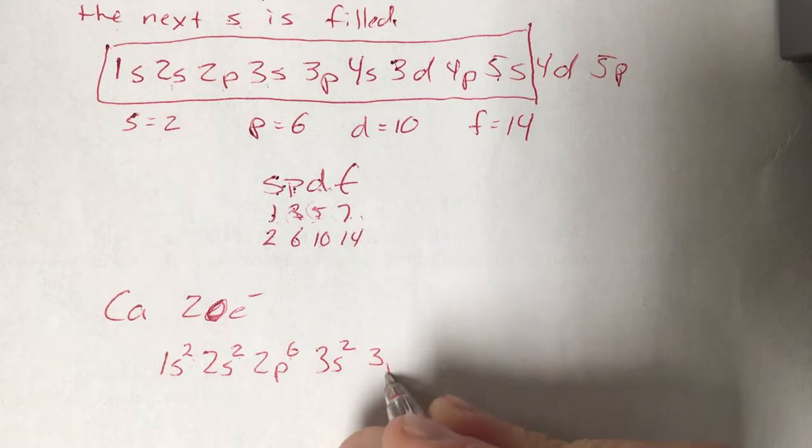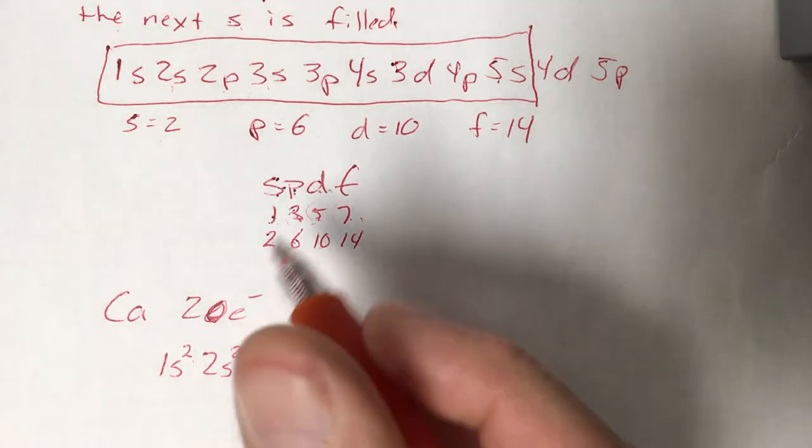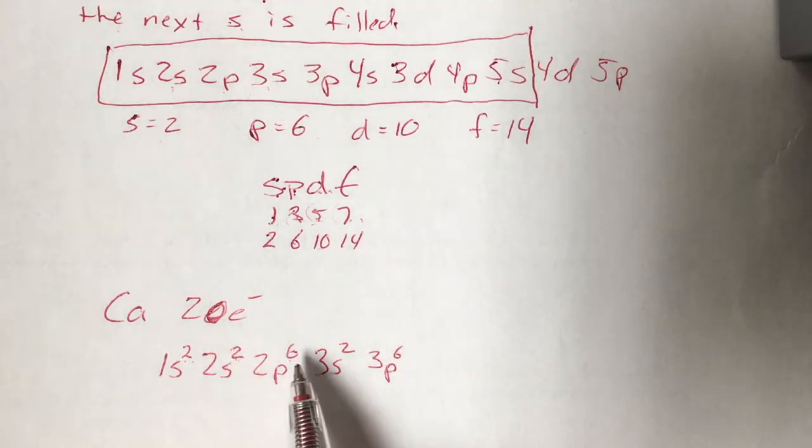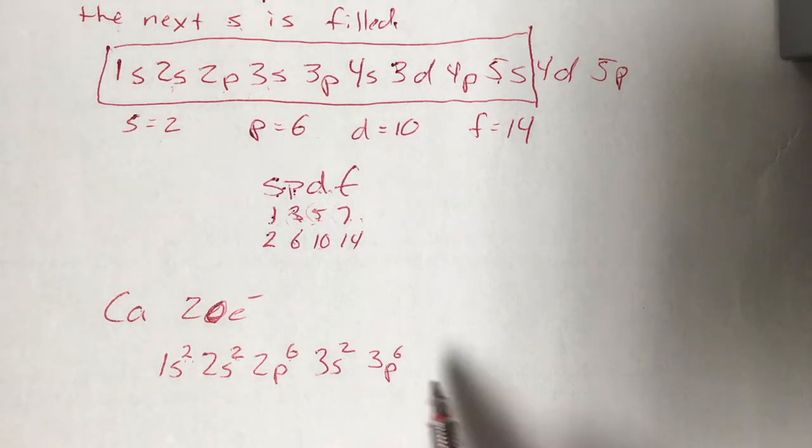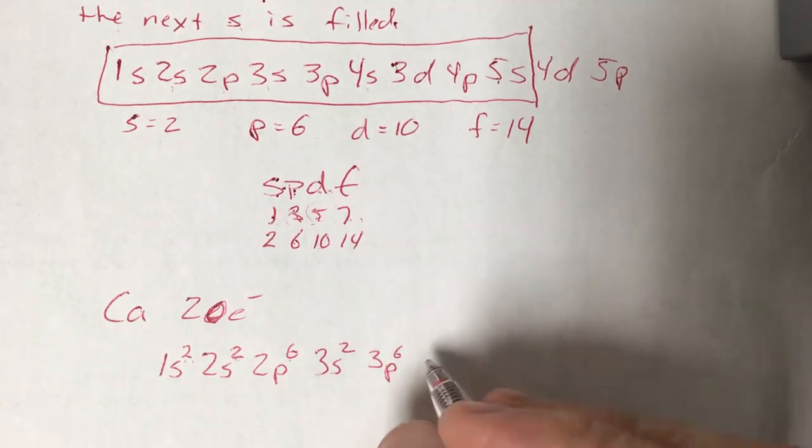3p is next. And in the 3p orbitals I can put 6 electrons because p's hold 6. 2 plus 2 is 4, plus 6 is 10, plus 2 is 12, plus 6 is 18. I've got 18 of my 20, I've got 2 left. And they'll both fit in 4s.